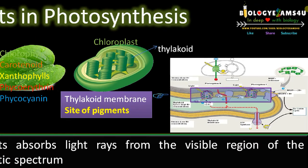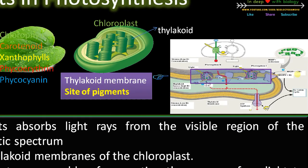Let us zoom in for better understanding. These are photosystems where pigments are located. Here these pigments receive light energy and convert it into chemical energy in the form of ATP and NADPH during the light reaction of photosynthesis.